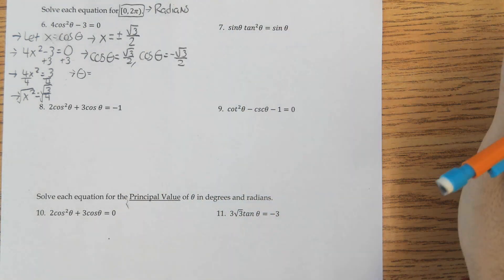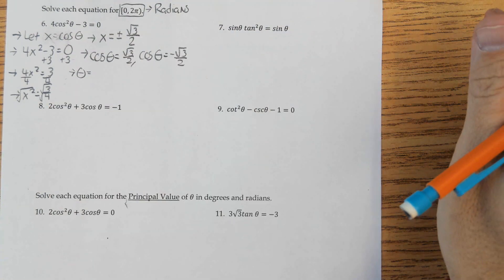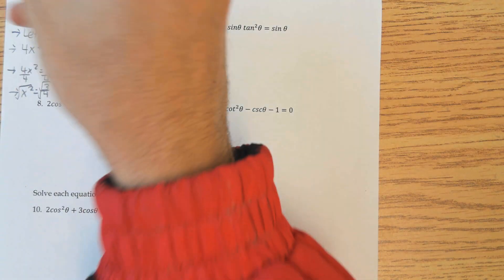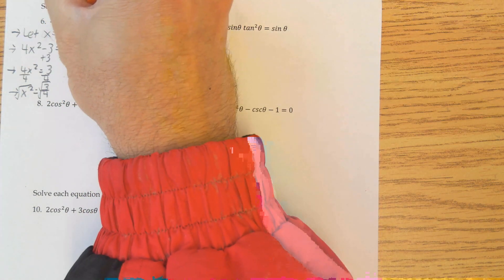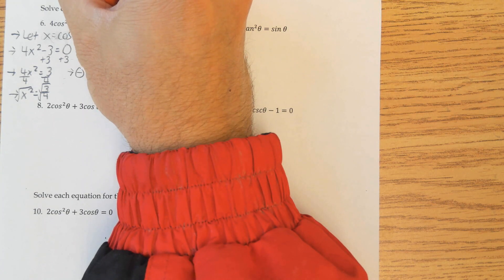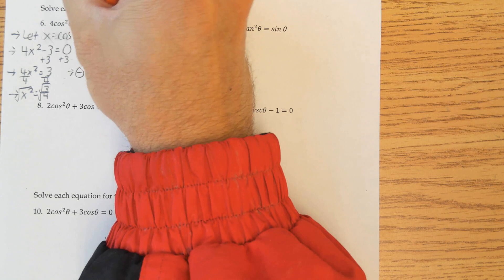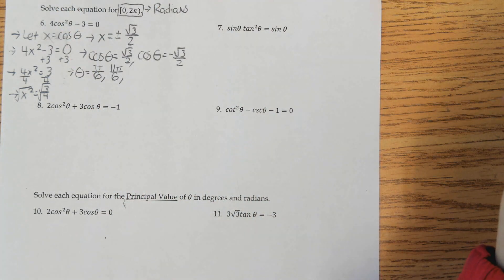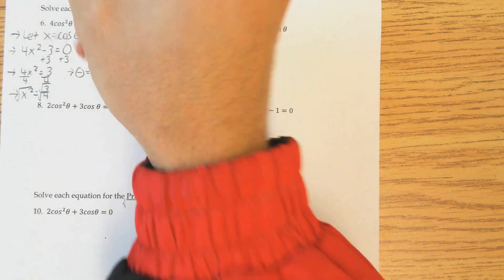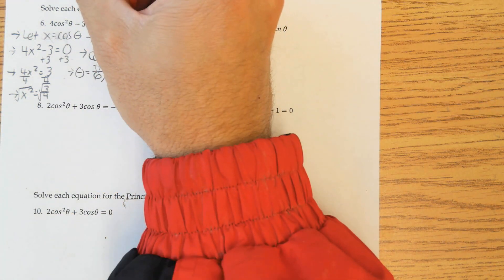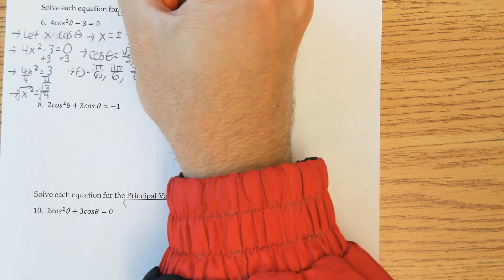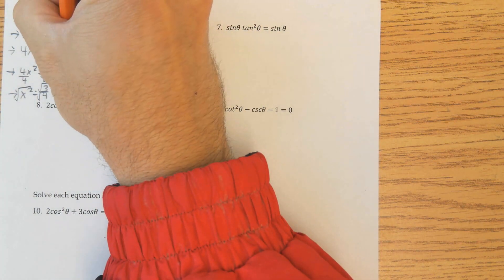We're answering in radians. Cosine is positive in quadrants 1 and 4: root 3 over 2 occurs at 30° which is π/6, and at 330° which is 11π/6. Cosine is negative in quadrants 2 and 3: negative root 3 over 2 occurs at 5π/6 (quadrant 2) and 7π/6 (quadrant 3). So those are your four answers.